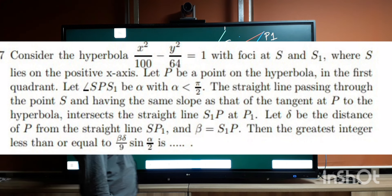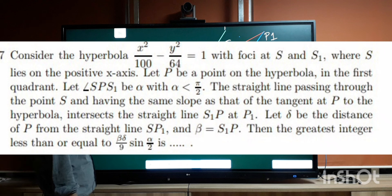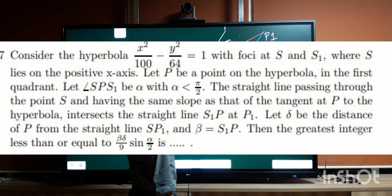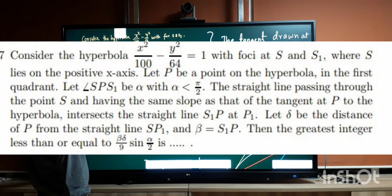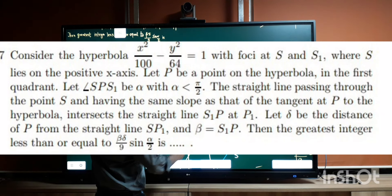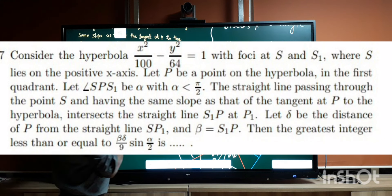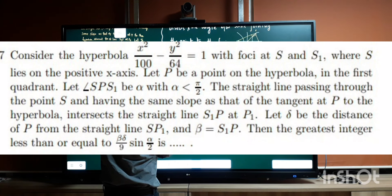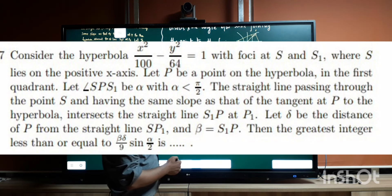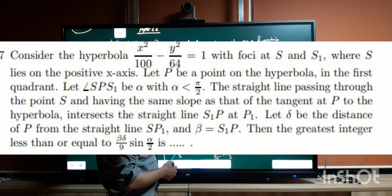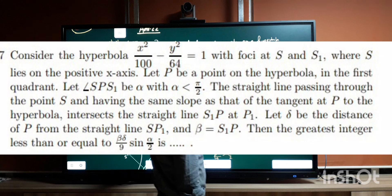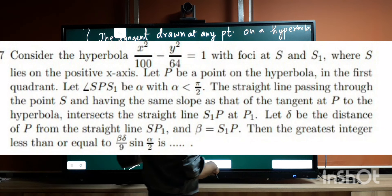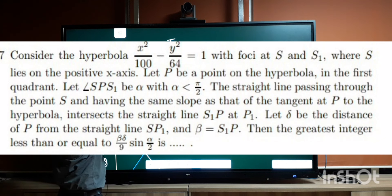It is given that line SP1 is parallel to the tangent — the green line is the tangent. Let P be a point on the hyperbola in the first quadrant. Let angle S·P·S1 be α. The tangent drawn at any point on a hyperbola bisects the angle between the lines joining the point to the foci, so the tangent bisects angle α into α/2 and α/2.